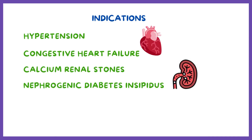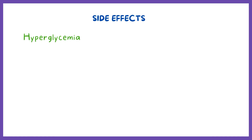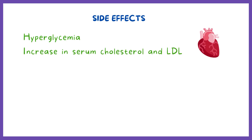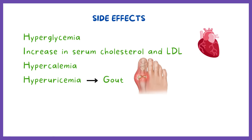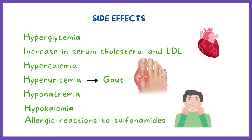However, thiazides do come with some side effects. They tend to tamper with sugar and fat metabolism, causing hyperglycemia and an increase in serum cholesterol and LDL. They also cause more calcium and uric acid to be retained in the blood, so hypercalcemia and hyperuricemia are a risk. Chronic hyperuricemia could also lead to gout. Since thiazides increase sodium and potassium loss in the urine, they can cause hyponatremia and hypokalemia. Additionally, people with allergic reactions to sulfonamide medications may develop an allergic reaction to thiazides and thiazide-like diuretics.